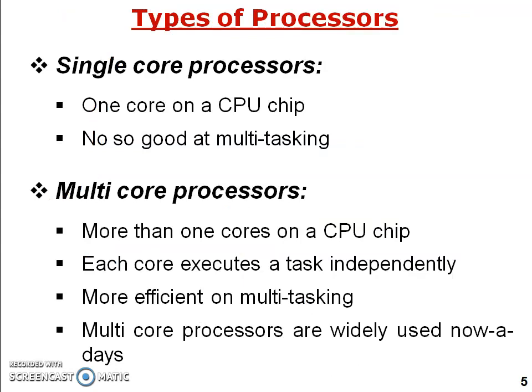Now, there are different kinds of processors. The first type is the single-core processor, used in earlier days. A single-core processor has one core on its CPU chip — one chip, one core. It is not good at multitasking, meaning only one task can be handled at a time, so multitasking techniques are not implemented in this type of processor.